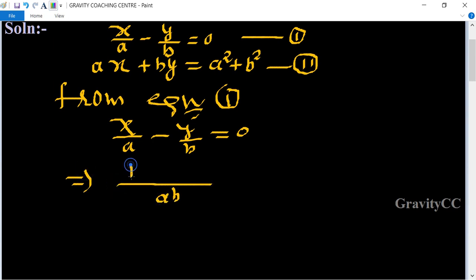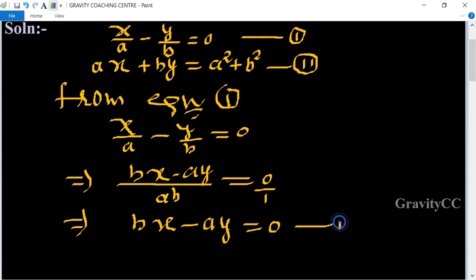So bx - ay = 0. After cross multiplication, we get bx - ay = 0. Suppose this is equation three.